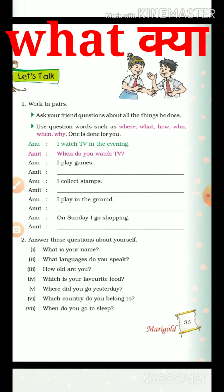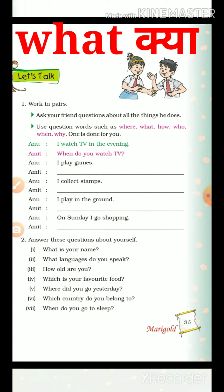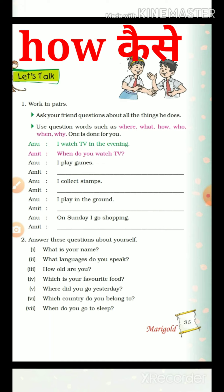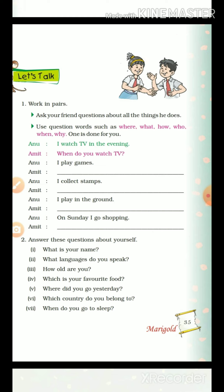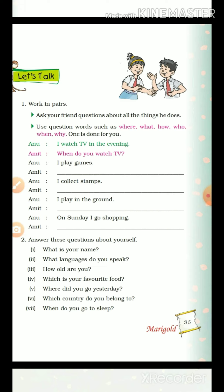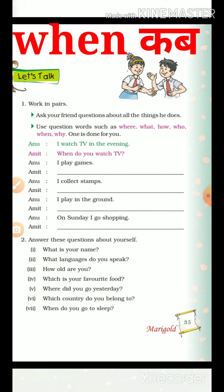'What' — what ka matlab hai 'kya?' (what). 'How' — how ka matlab hai 'kaisi?' (how). For example, 'How do you do?' means 'Aap kaisi hain?' 'Who' — who ka matlab hai 'kaun?' (who). For example, 'Who are you?' means 'Aap kaun hain?' 'When' — when ka matlab hai 'kab?' (when).